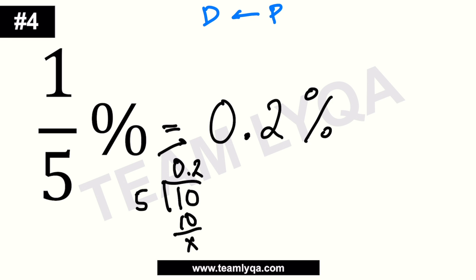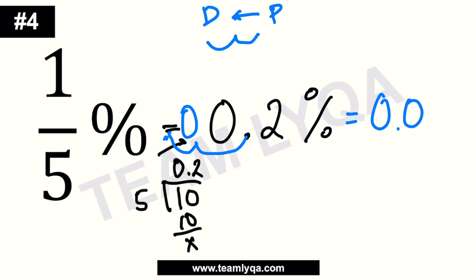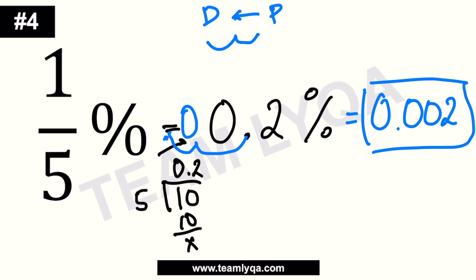Now that it's in percent form, we can use our technique — move to the left twice: 1, 2, plus one more zero. So the answer is 0.002.